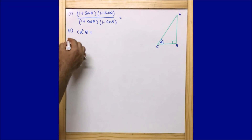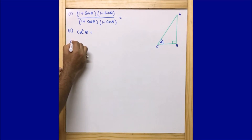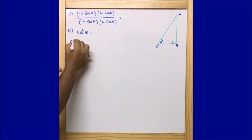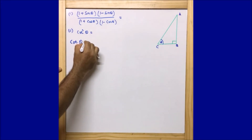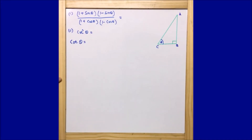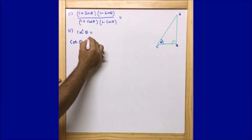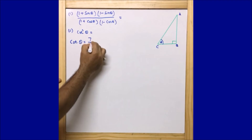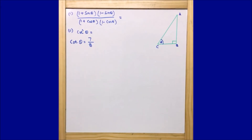Let us first write down what is given: cot θ = 7/8. We should know by this time what sin θ, cos θ, and tan θ are. If we know tan θ, then we can definitely find cot θ.